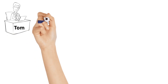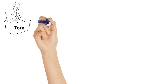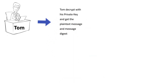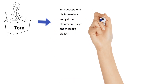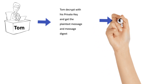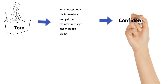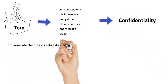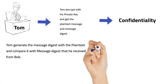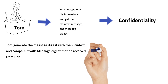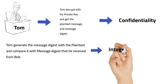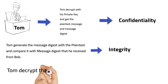Confidentiality is achieved since Tom is decrypting the message with his own private key, which is known only to him. Next, Tom generates a message digest from the plain text he received and compares it with the message digest received from Bob. When both message digests match, integrity is achieved — meaning no one in the middle of the transaction altered the message.